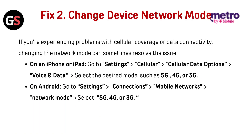Fix 2: Change Device Network Mode. If you are experiencing problems with cellular coverage or data connectivity, changing the network mode can sometimes resolve the issue. On an iPhone or iPad, go to Settings, then Cellular, then Cellular Data Options, then Voice and Data. Select the desired mode such as 5G, 4G, or 3G.